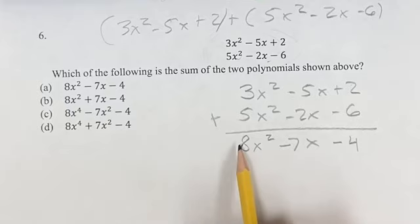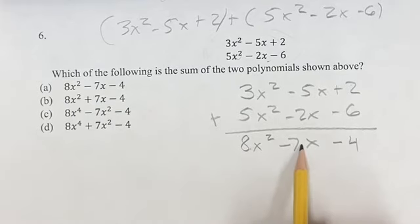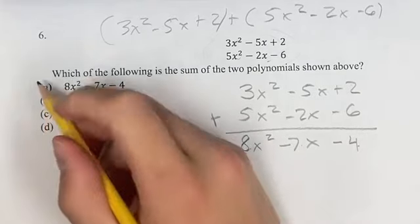To make sure you've counted all your terms, and you get your final answer is 8x squared minus 7x minus 4, which correlates with answer a.